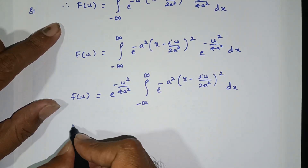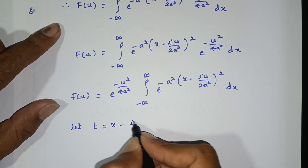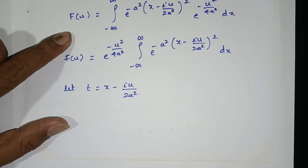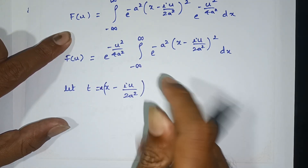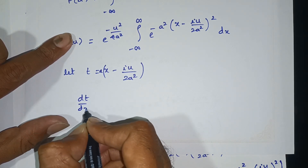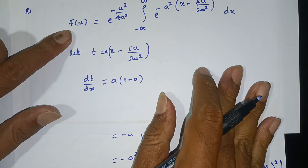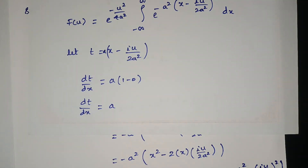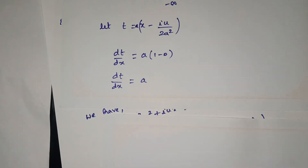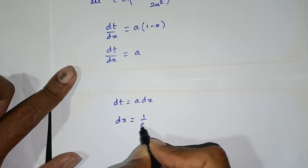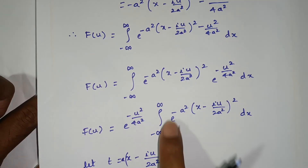Now we apply substitution. Let t equal to x minus iu by 2a square, so a times x minus iu by 2a square. Then dt by dx equals a, therefore dt equals a dx, so dx equals 1 by a times dt. The limits remain the same: when x goes to infinity, t goes to infinity; when x goes to minus infinity, t goes to minus infinity.